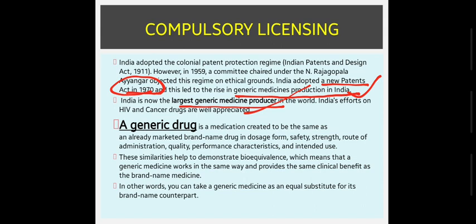Before going into details of compulsory licensing, let's see what is a generic drug. A generic drug is a medication created to be the same as an already marketed brand name drug in dosage form, safety, strength, route of administration, quality, performance, characteristics and intended use. These similarities help demonstrate bioequivalence, which means that a generic medicine works in the same way and provides the same clinical benefit as a brand name medicine.